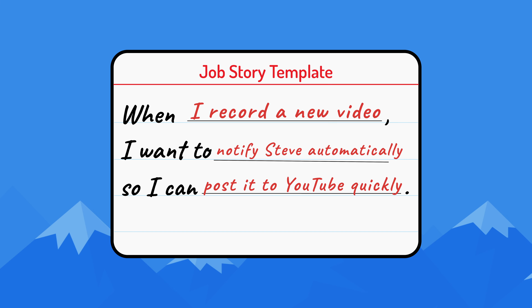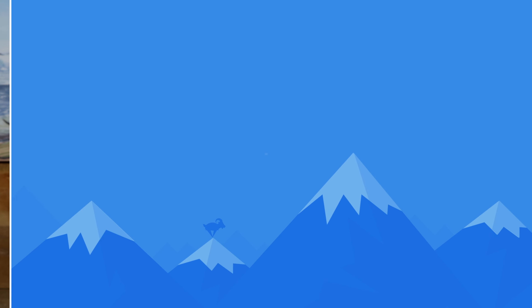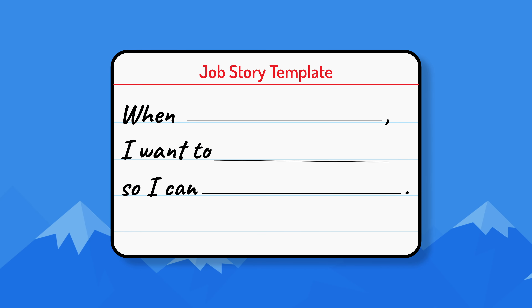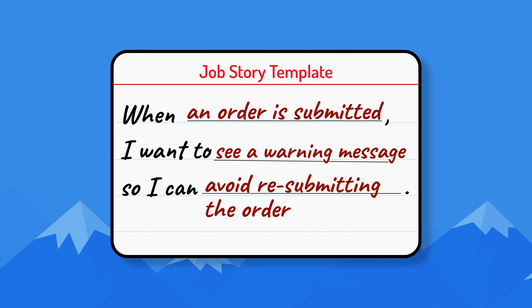But if I give this story to a team and they have a better way of achieving the expected outcome, that's great. To see the times when job stories may be better than user stories, let's look at some sample job stories and their corresponding user stories. Let's start with this job story: when an order is submitted, I want to see a warning message so I can avoid resubmitting the order.